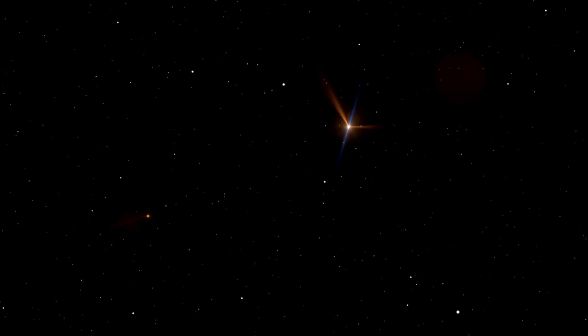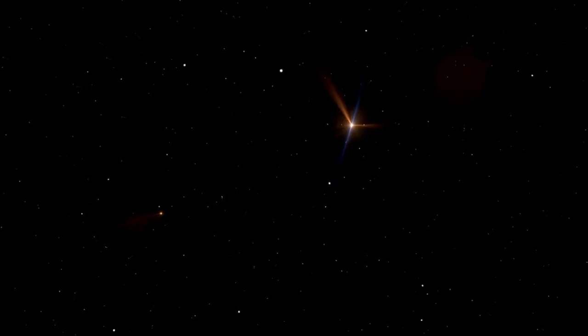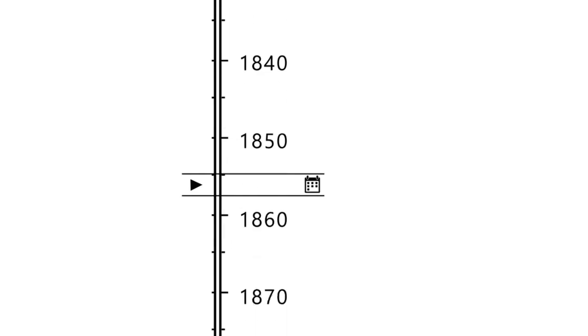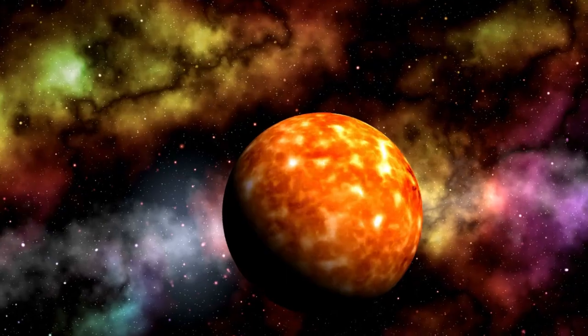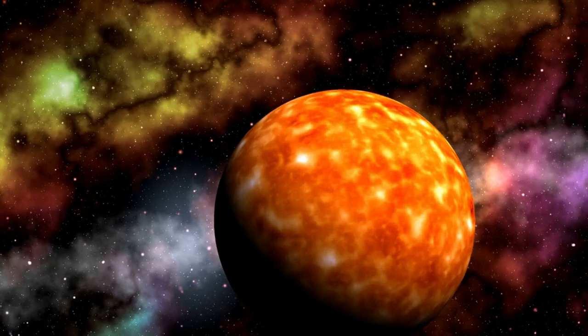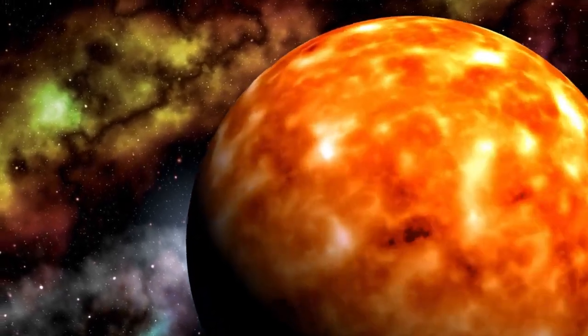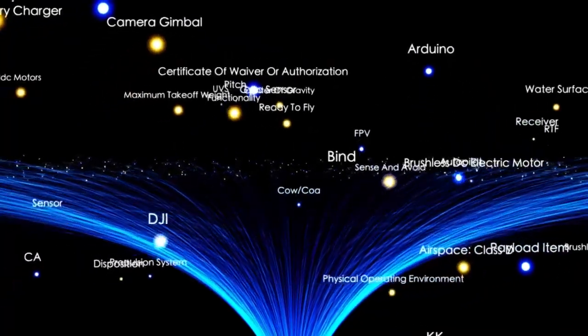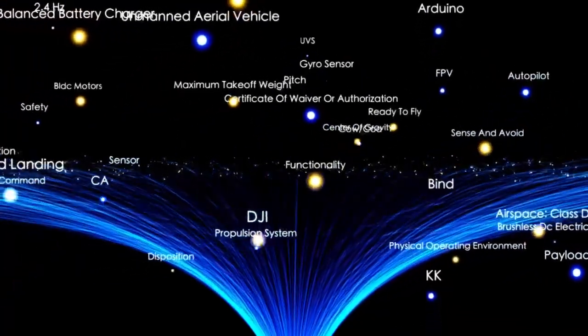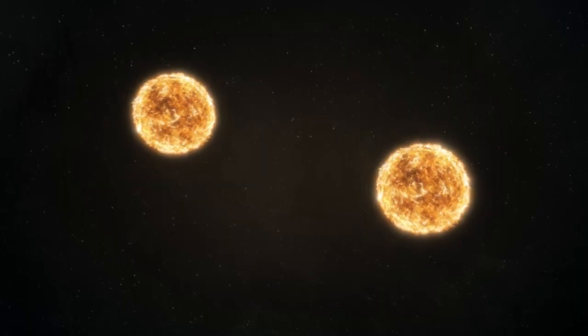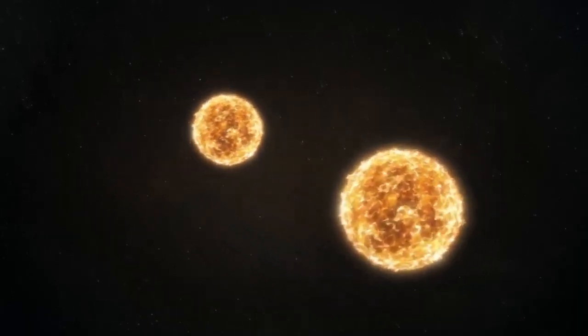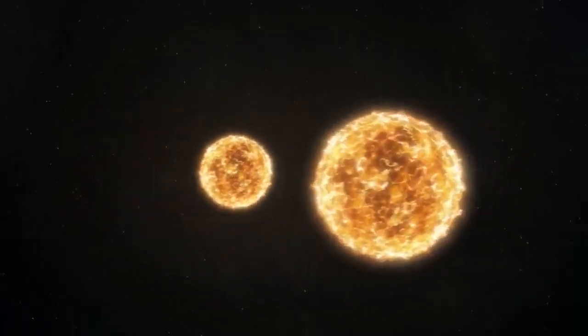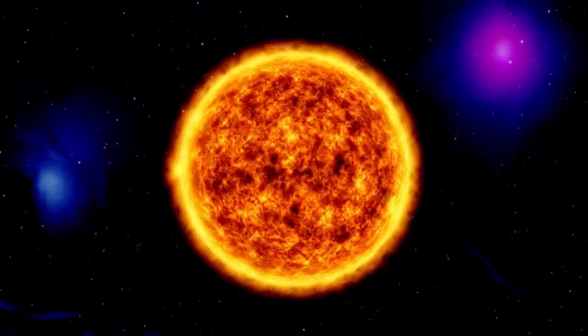Betelgeuse is around 100,000 times more luminous than the Sun, which places it among the brightest stars in the night sky. Its distinct red hue and the fact that it lies in the easily recognizable Orion constellation have made it a fixture of stargazing for centuries. For astronomers, Betelgeuse provides a valuable opportunity to study the life cycle of massive stars. But its proximity and size also raise concerns about what might happen if it were to explode, especially given the fact that such an explosion could release vast amounts of energy, potentially affecting Earth in ways that are still not entirely understood.